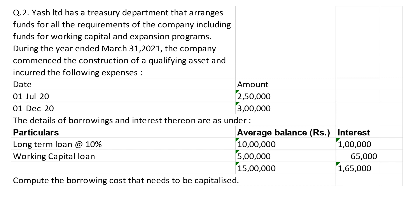Details of the borrowing and interest thereon: in the particulars, average balance and interest are given. Long term loan average balance is 10,00,000 and interest amount is 1,00,000. Working capital loan is 5,00,000 and interest on working capital at 10% is 65,000. Total average balance is 15,00,000 and total interest is 1,65,000. Compute the borrowing cost that needs to be capitalized.